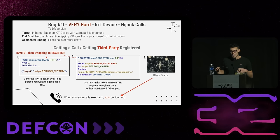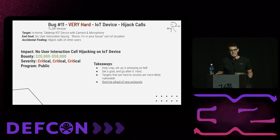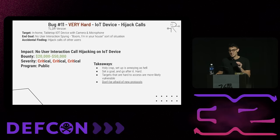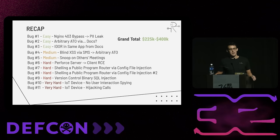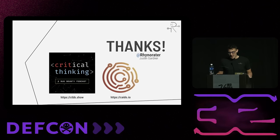We could essentially do a third-party register for any other user and map their address of record — the thing that routes calls to them — to our contact location. Then when somebody calls that user, our device would start ringing. That was another 20 to 50K critical on a public program. Takeaways: don't be afraid of new protocols — that's one of the biggest takeaways from my many years of bug bounty. That was the recap: 11 bugs, all paid as critical. The grand total was somewhere between 225 and 400K for all those bugs. Thank you guys.